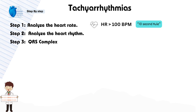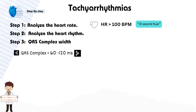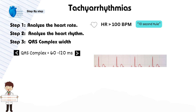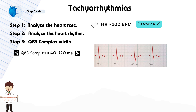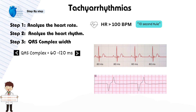Step 3: Check the width of the QRS complex. Normally it's 60 to 120 milliseconds, but in tachyarrhythmias it can be narrow or wide. For instance, a narrow QRS complex around 80 milliseconds suggests the electrical impulse is traveling through the normal pathway. In contrast, a wide QRS complex greater than 120 milliseconds indicates an abnormal pathway.